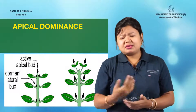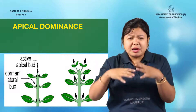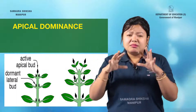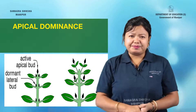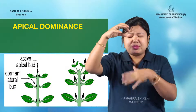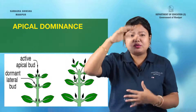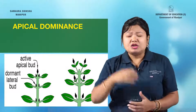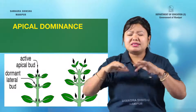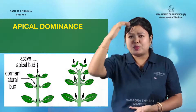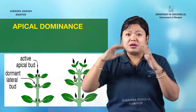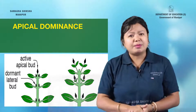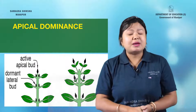Apical dominance, as the name indicates, relates to the apex. When the apical bud of the plant is dominant, it suppresses the growth of the lateral buds. This phenomenon is called apical dominance.